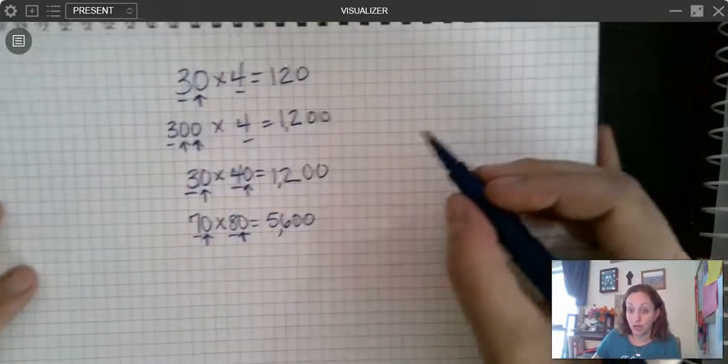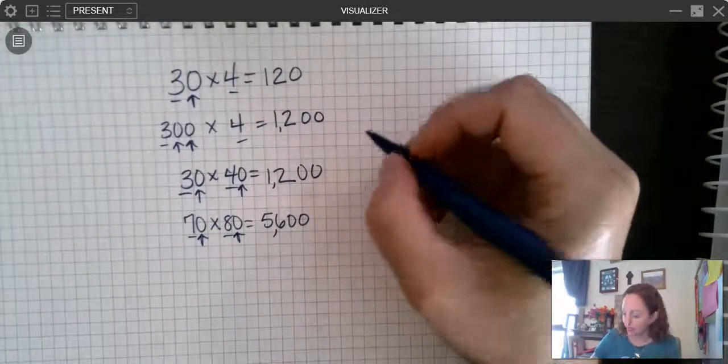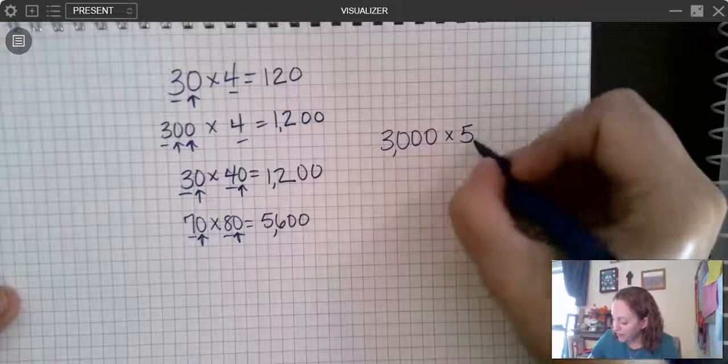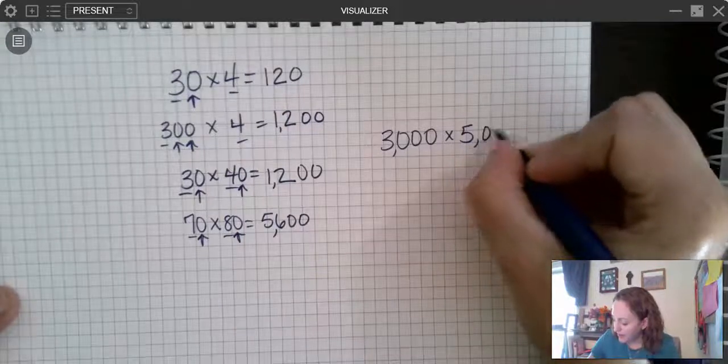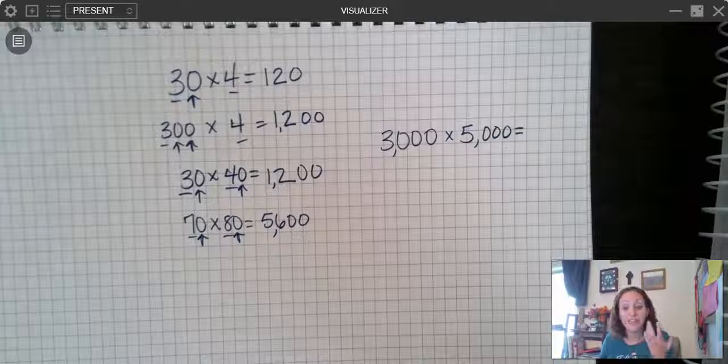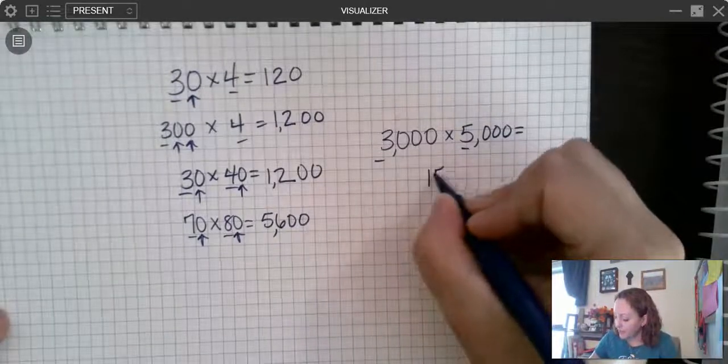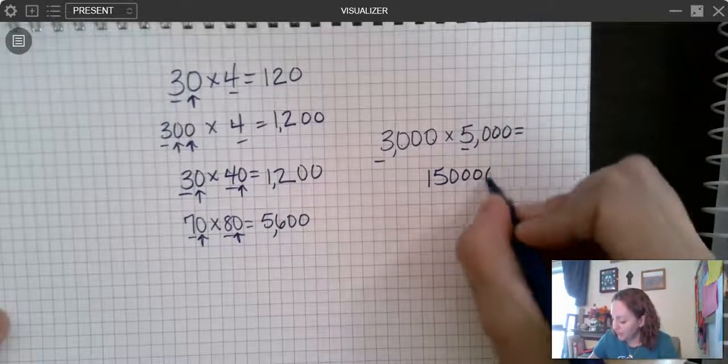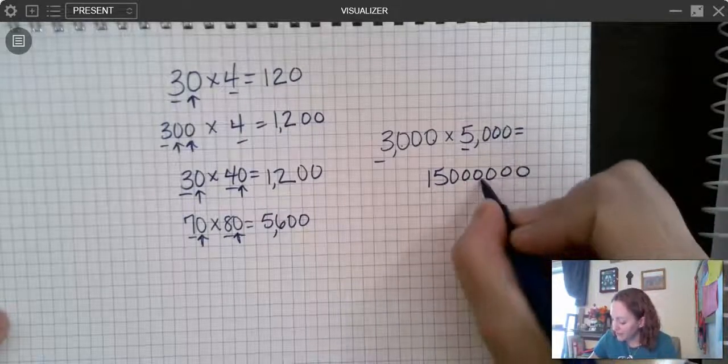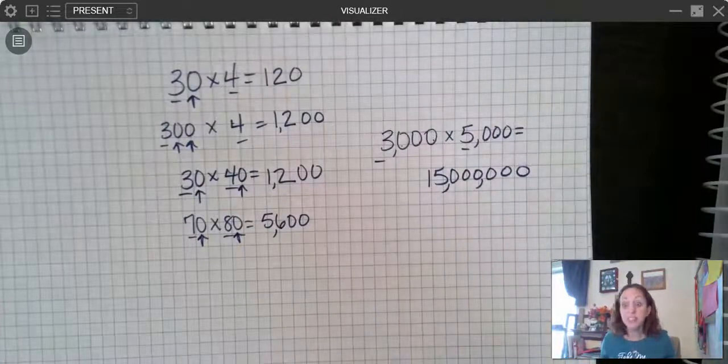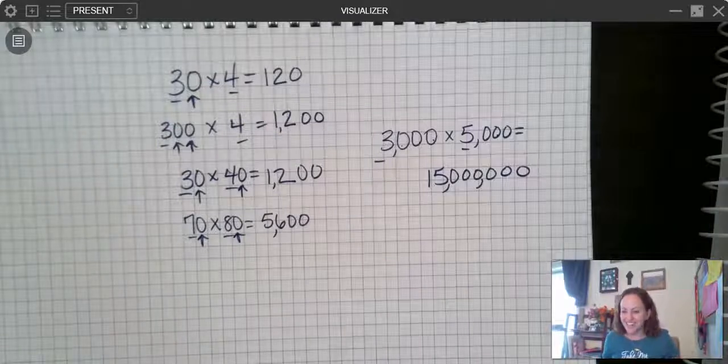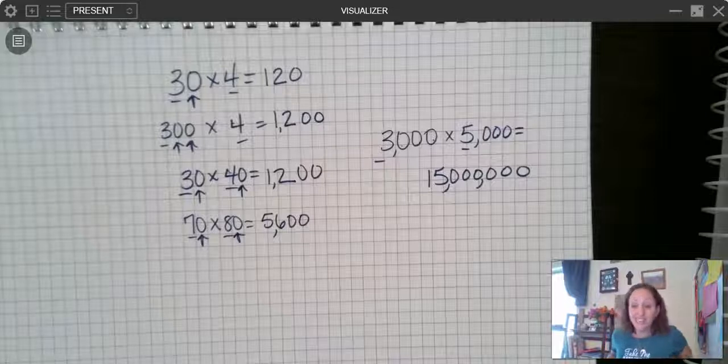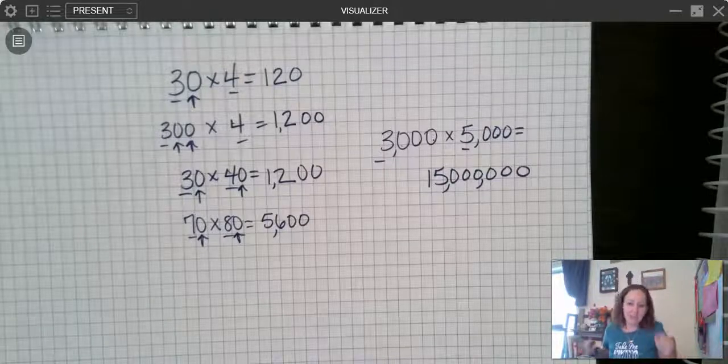We could even do this, like I'm just going to show you one really quick example. This is not something you do in fourth grade but if I have 3,000 times 5,000, it's the same thing. 3 times 5 equals 15 and I have 1, 2, 3, 4, 5, 6 zeros. So I get 15 million. You can use this strategy. It's a great strategy and you can really go out and impress your friends and be like hey I can multiply 3,000 times 5,000 in my head. That's always fun to do too.